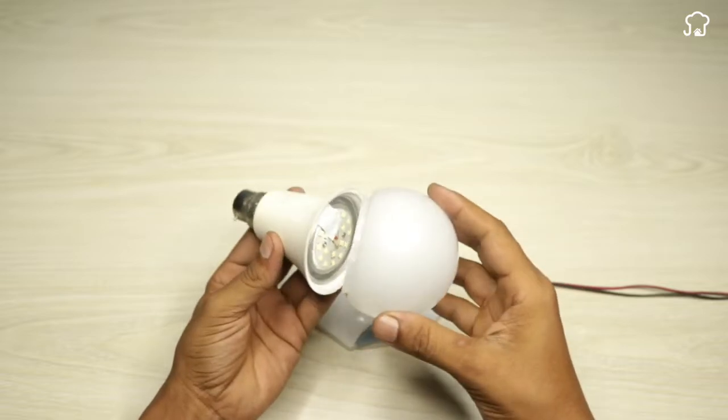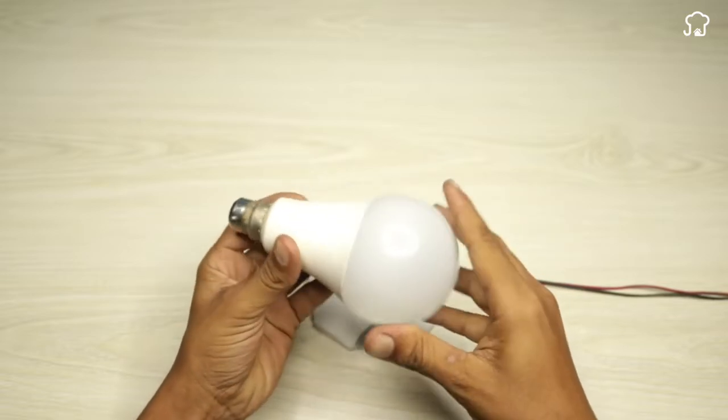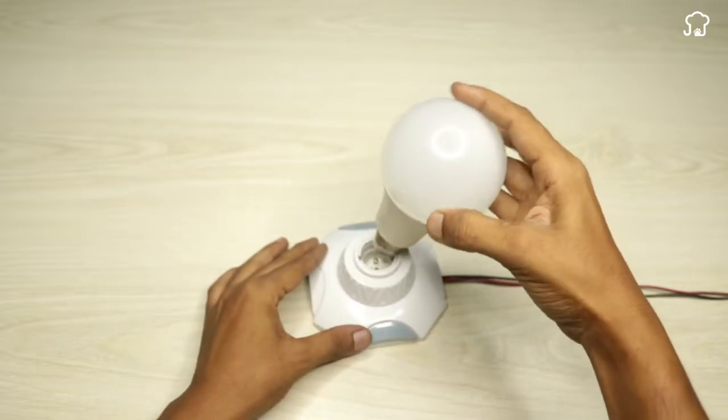Finally, replace the plastic cover over the bulb circuits, making sure it is securely fastened. Your bulb will be like new and ready to be used again.